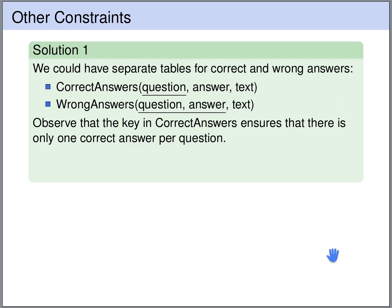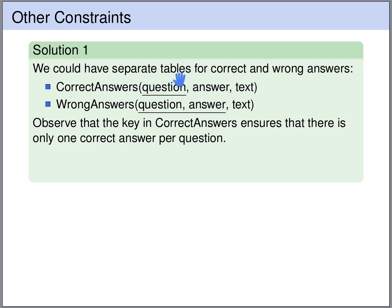One possible way to enforce this is to split the answers into correct answers and wrong answers. The correct answers have the question number, the answer letter, and the text. Likewise, the wrong answers also have question number, answer letter, and text. But there is an important difference: in the correct answers table the question alone forms a key, while in the wrong answers table the question and the answer letter together form a key. This means that in the wrong answers table we can have multiple wrong answers with different answer letters for every question, however in the correct answers table we can have only one answer for every question.